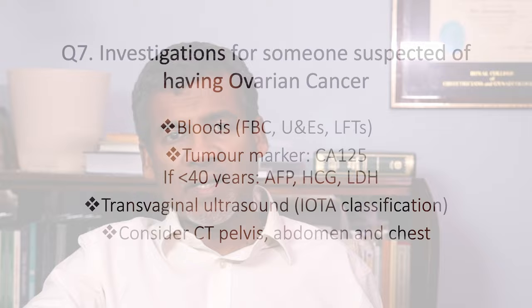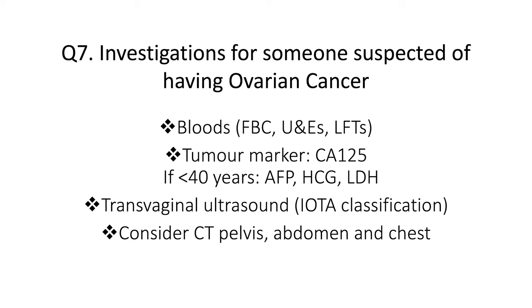Question 7: What investigations are needed in someone suspected of having ovarian cancer? First, don't forget the general blood workup: full blood count, U&Es, and LFTs. Second, tumour markers — the main one being CA125. Remember that a raised CA125 is neither very sensitive nor specific; it may not be raised in those with ovarian cancer, and a raised level does not confirm cancer. In women under 40 years, it is worthwhile doing AFP, HCG, and LDH to look for germ cell and stromal ovarian tumours.